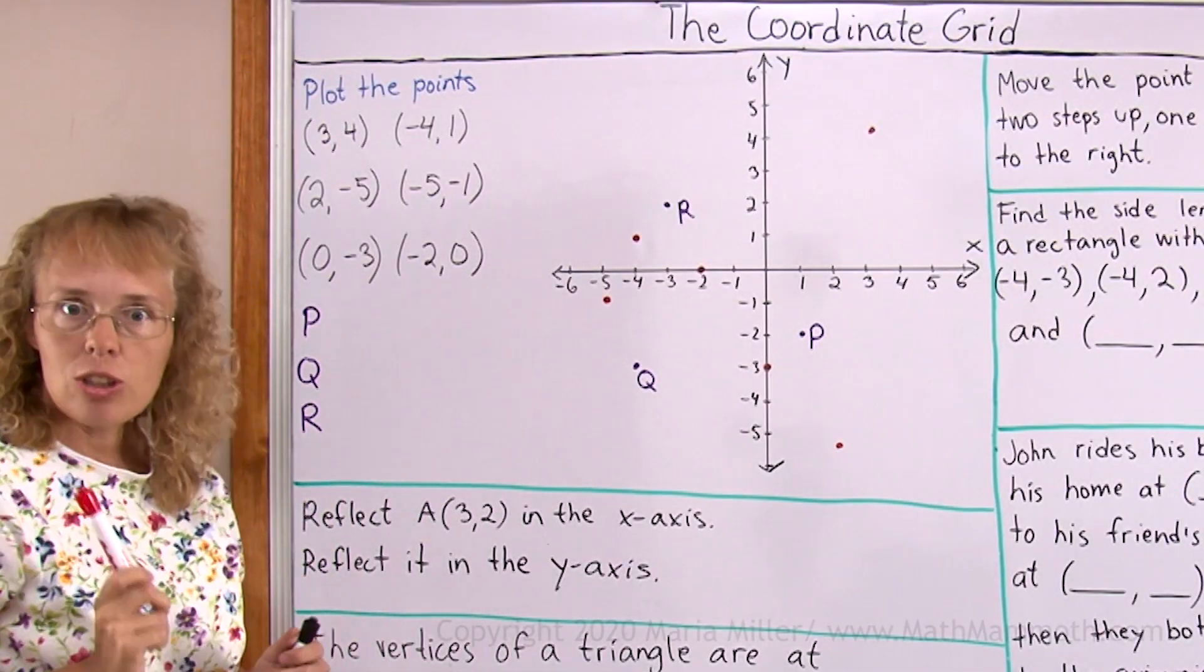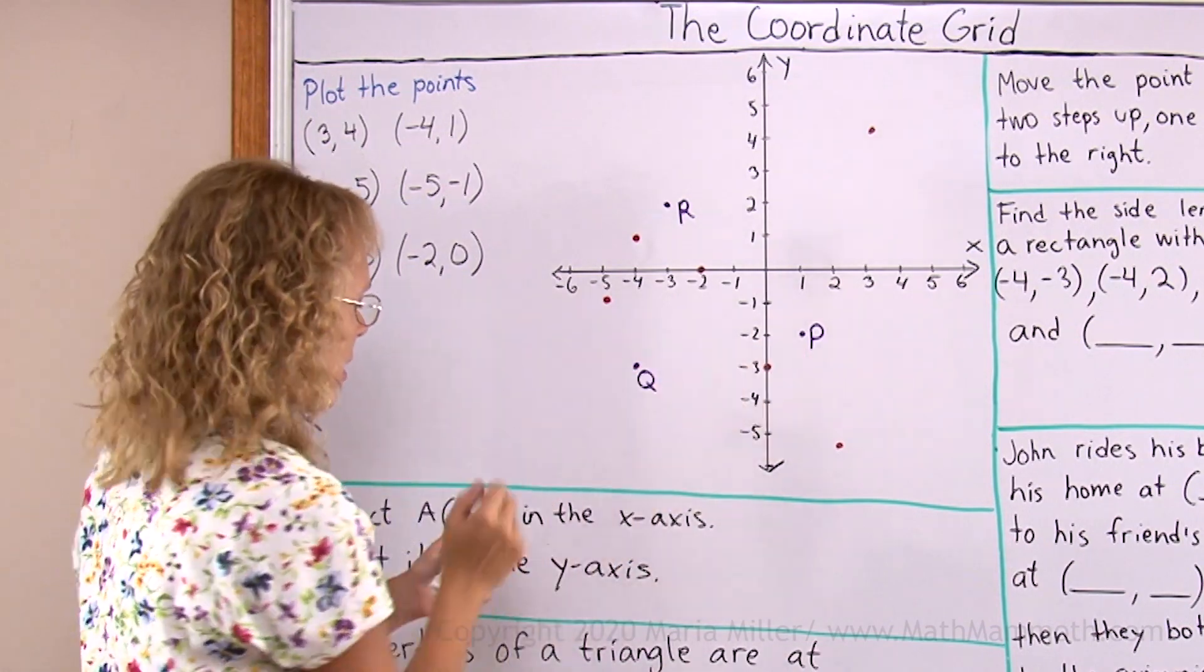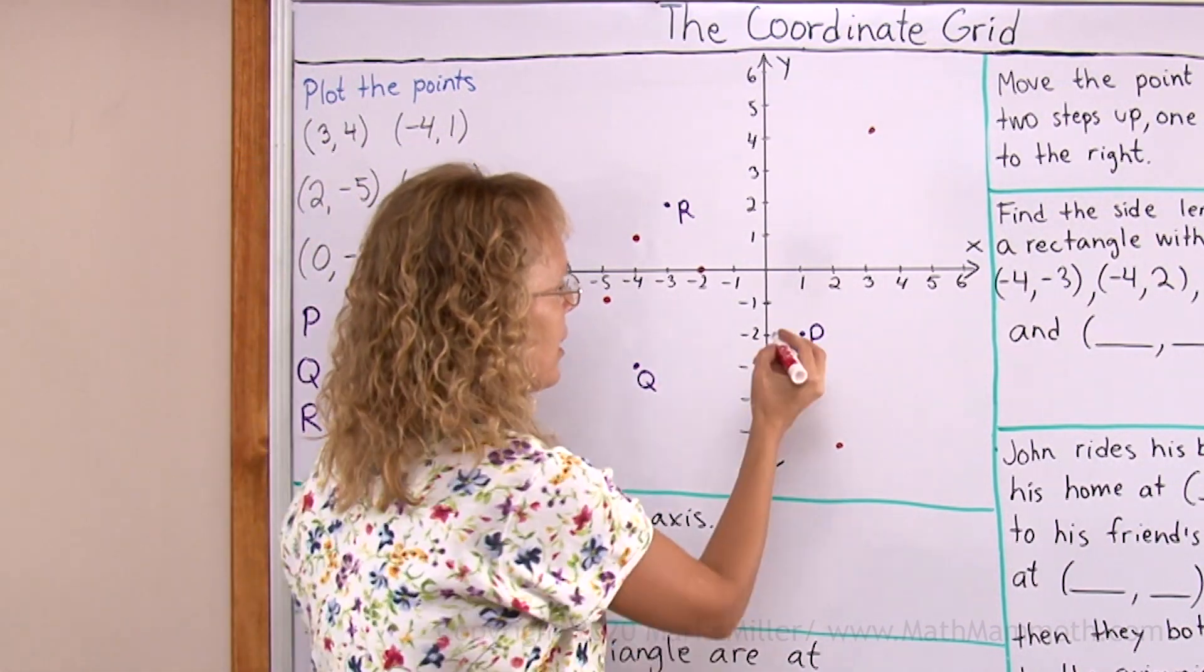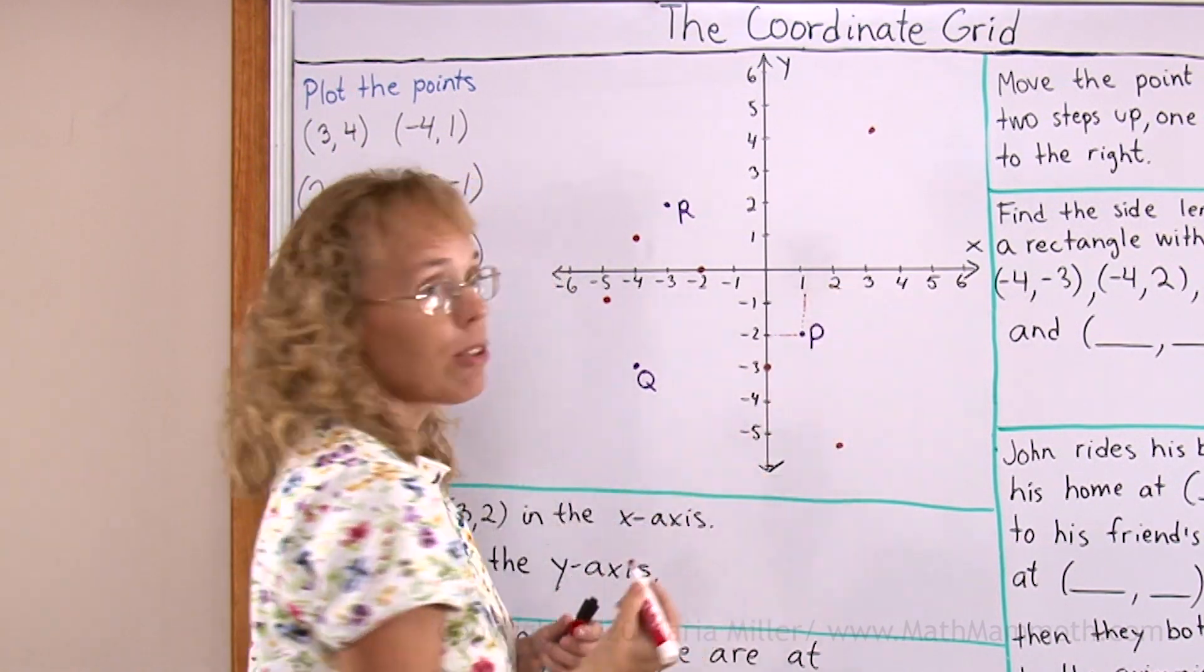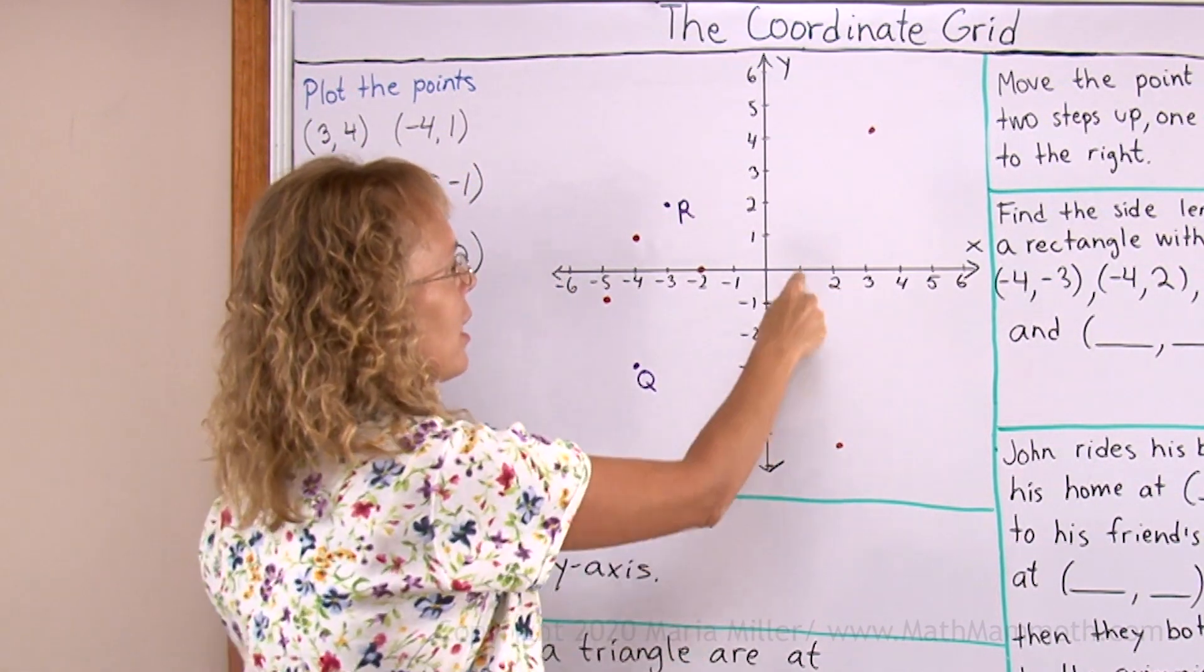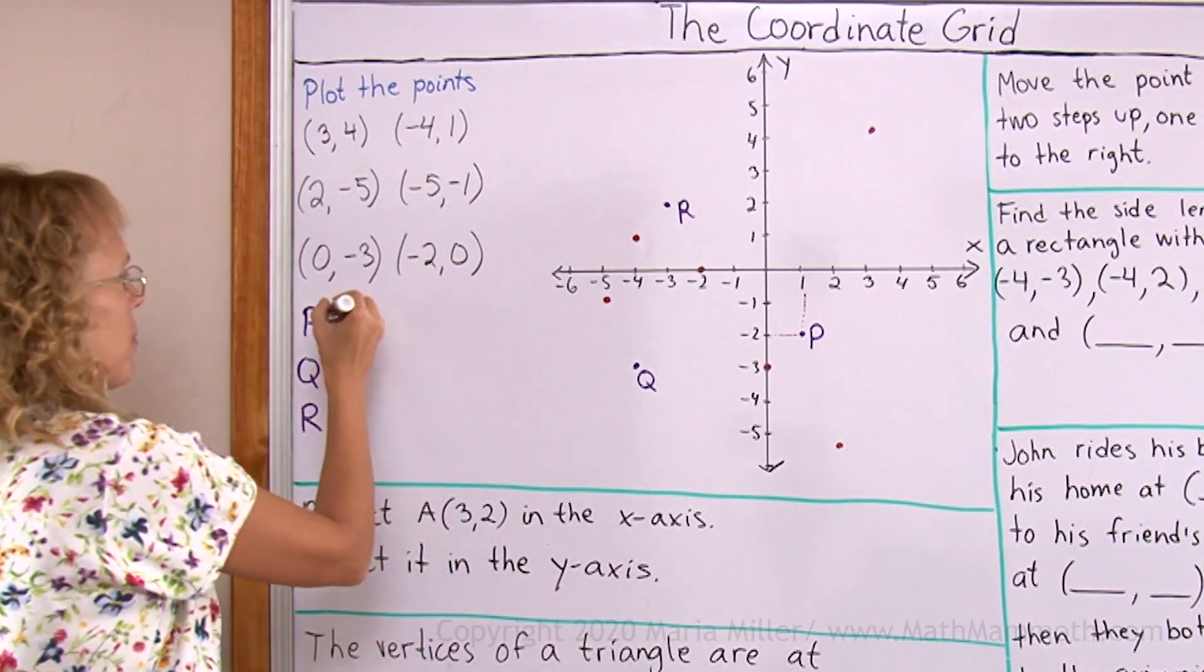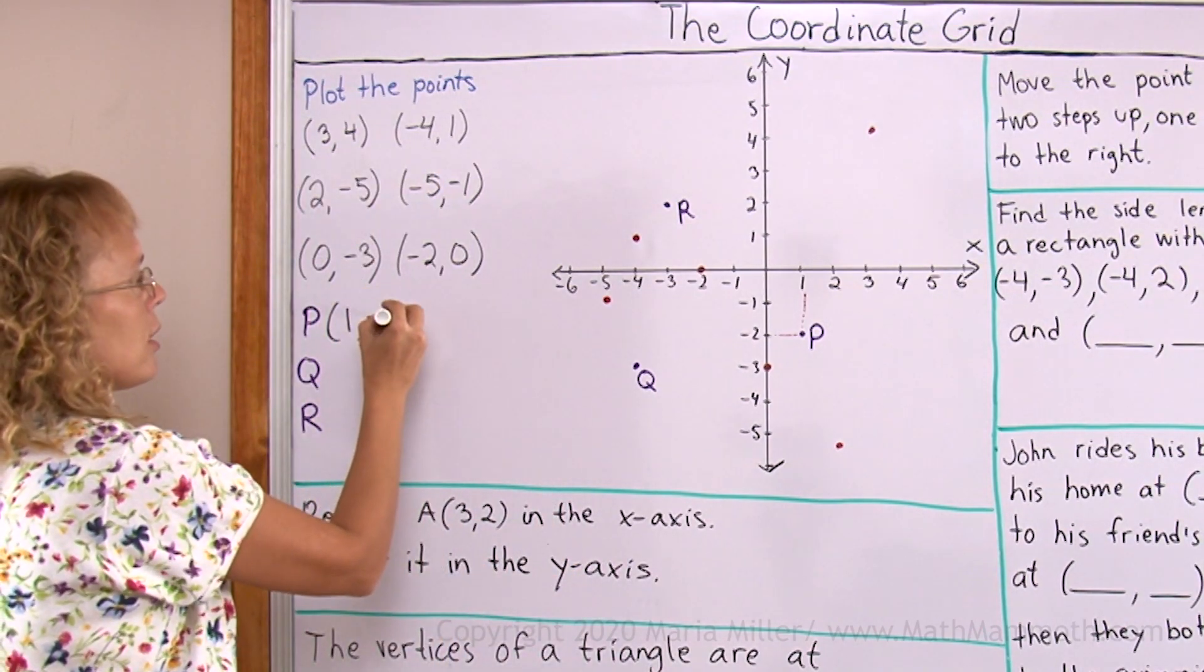P, let's find the coordinates of the point P over here. Basically you look from P towards the y-axis and towards the x-axis and record your numbers. So x-coordinate is 1 and the y-coordinate is negative 2.